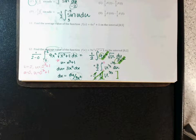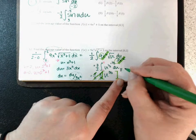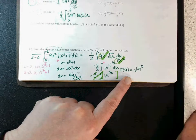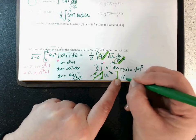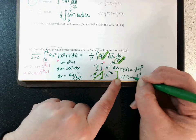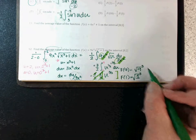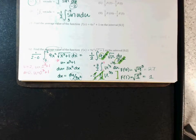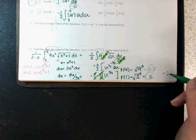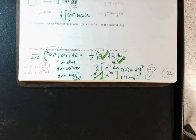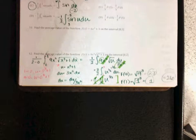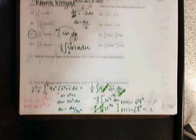Evaluate from 1 to 9: F(9) = 9 to the three-halves. Square root of 9 is 3, and 3 cubed is 27. F(1) = 1 to any power is 1. Subtract: 27 minus 1 = 26. So the final answer is 26. Number 11 is average value using the same general concept.